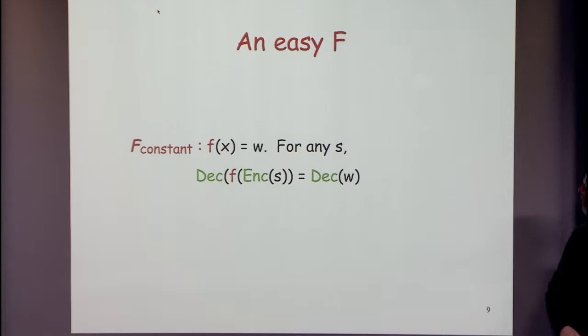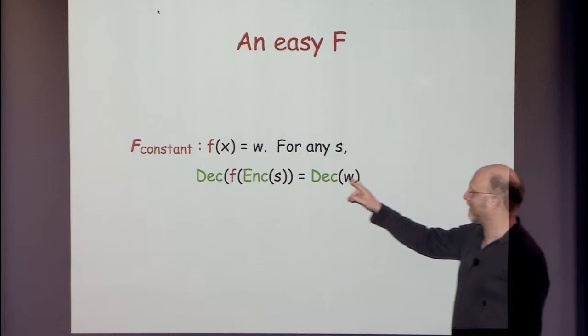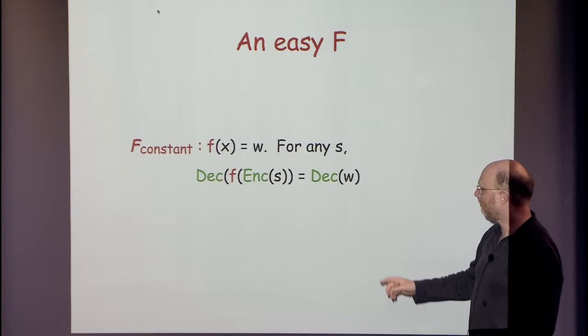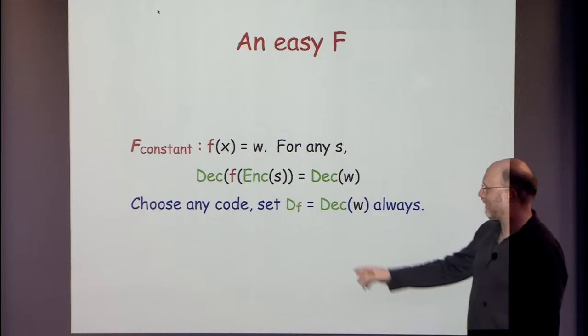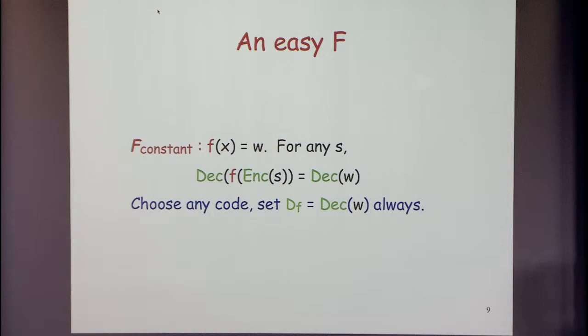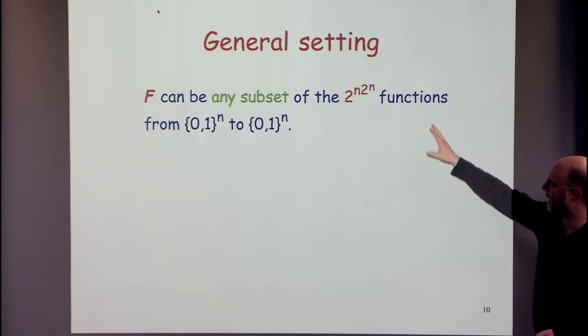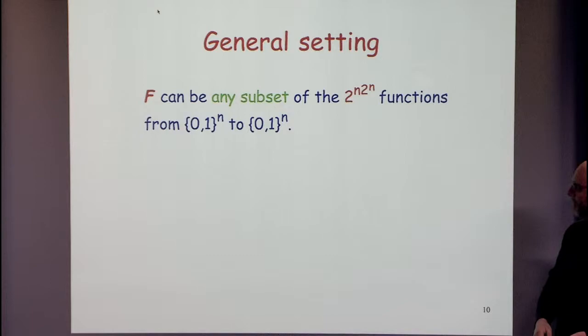We're interested in the rate and in epsilon, the error probability. As an easy example, consider constant functions that just output some string W: for any message S, the decoder outputs the decoder of W. Any code is non-malleable with respect to constant functions, because we can set DF to be the decoder of W always. In general, we may have any subset of the doubly exponentially many functions from n bits to n bits, and it's not hard to see there can't exist a non-malleable code against all functions.